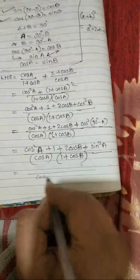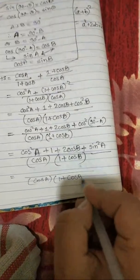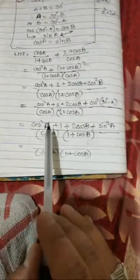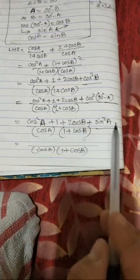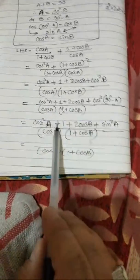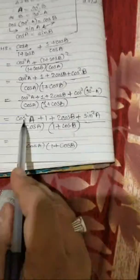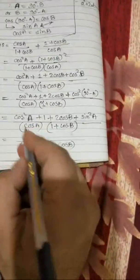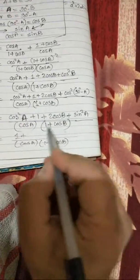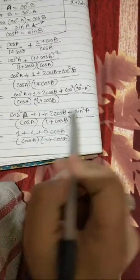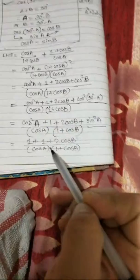Next step: denominator remains cos a into 1 plus cos b. In the numerator we have cos squared a plus 1 plus 2 cos b plus sin squared a. We can see that cos squared a and sin squared a are both present with addition between all terms, so taking these two terms, the identity cos squared a plus sin squared a equals 1 gives us 1. So instead of those two terms we get 1.